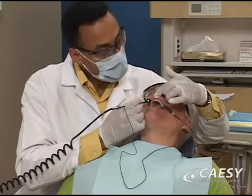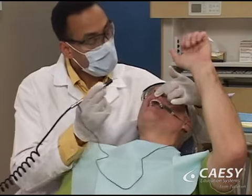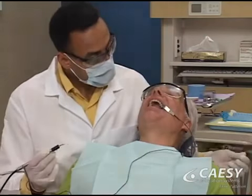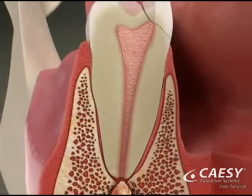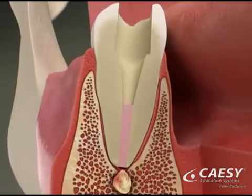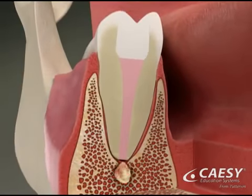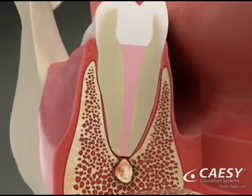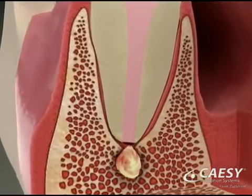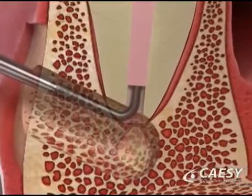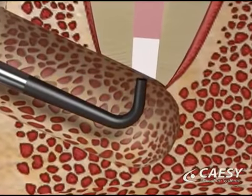We may also use an electric pulp tester to determine whether the pulp is inflamed or infected. An infected tooth will never heal on its own, so we will remove the infection with root canal therapy, allowing the abscess to heal. Occasionally, however, the infection continues to grow after treatment. In that case, we may re-treat the tooth or use a minor surgical procedure to stop the infection.